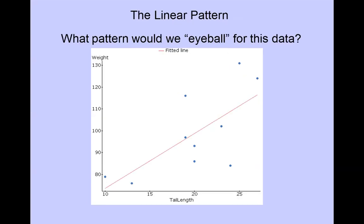Now the pattern we might eyeball for an average or typical relationship would be an increasing linear pattern for this data. So as tail length increases, weight of wolves is also increasing. Notice there are no unusual values such as a wolf with a really long tail but a really low weight or vice versa.